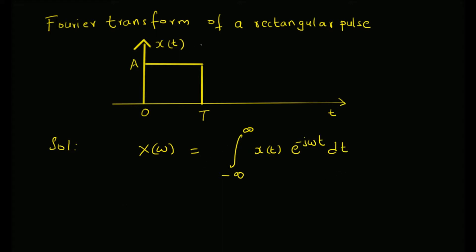By applying the definition of x(t), that is the rectangular pulse for this function, we get the following: X(ω), the Fourier transform of the rectangular pulse, is the integral from 0 to T, because x(t) is non-zero only in this interval, and the value is a · e^(−jωt) dt.